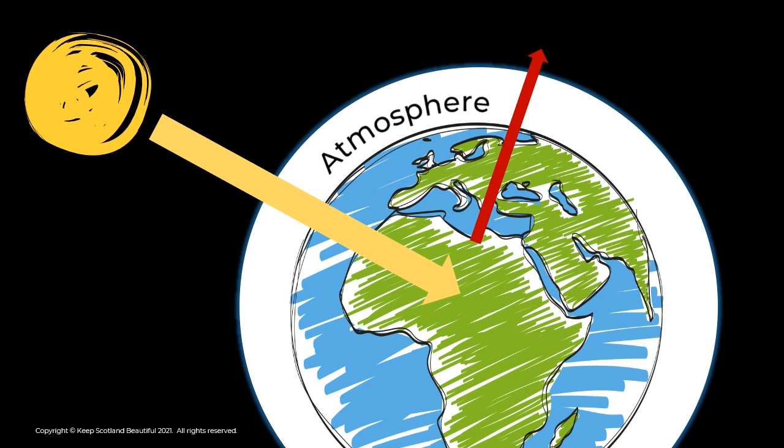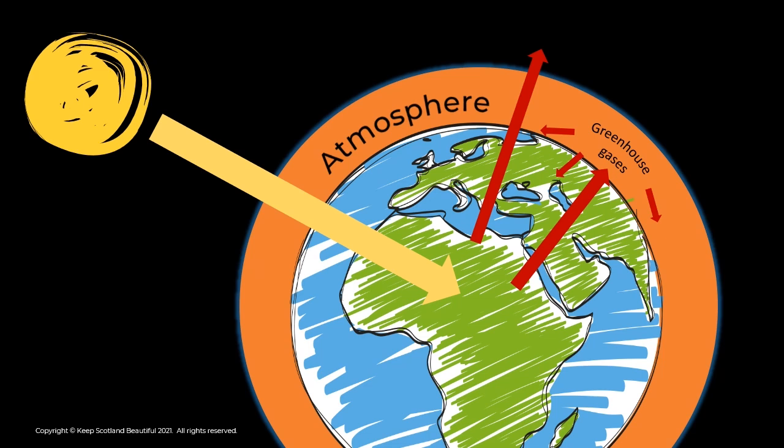Surrounding the earth we have the atmosphere. In the atmosphere are gases called greenhouse gases which have been there a lot longer than humans have been around. When the heat from the Sun hits the greenhouse gases, some of it gets reflected back to earth, warming the planet. Without greenhouse gases the earth would be too cold to sustain life as we know it.